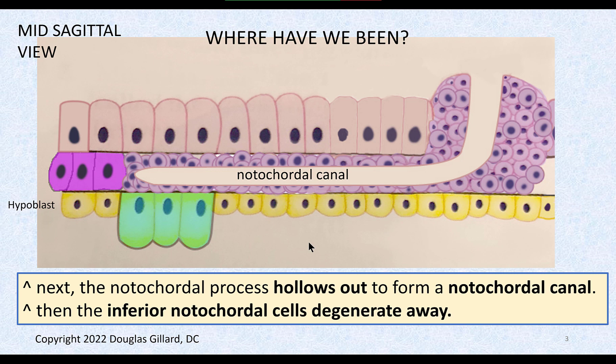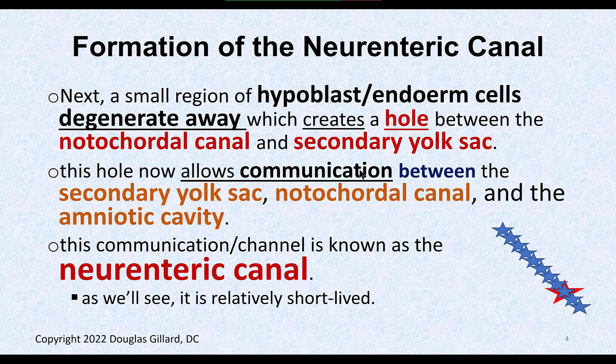After the solid notochordal cord is formed, it hollows out to form a notochordal canal. This canal connects right up through the primitive node. Remember the big picture: the amnion with amniotic fluid is here, and beneath is the secondary yolk sac with a saline-like fluid. We don't yet have a mature notochordal cord — we need mature cells to eventually form the neural plate, which will give rise to the brain and spinal cord.